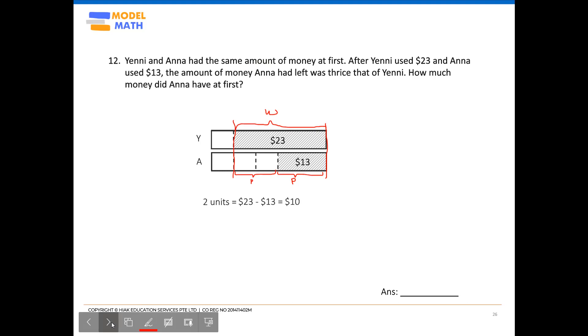From here, now that we have two units, you should naturally know that the next part would be to solve for one unit, where one unit will be $10 divided by two because it's two units, whereby we will get $5. One unit equals $5.